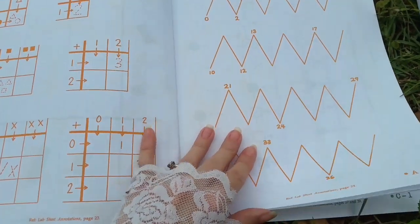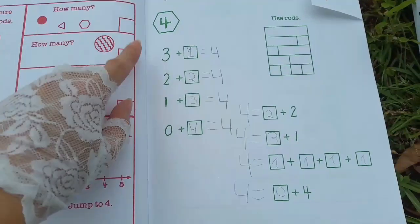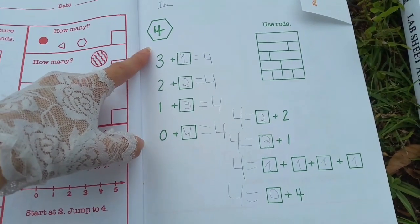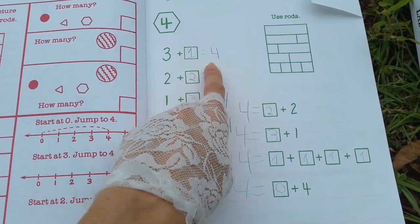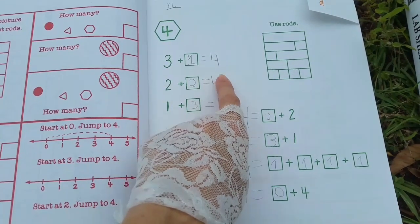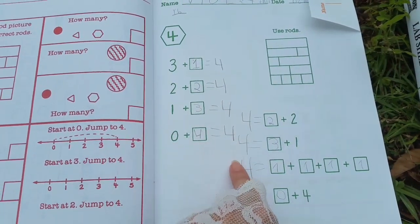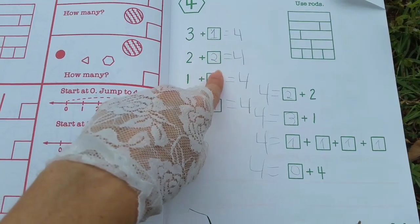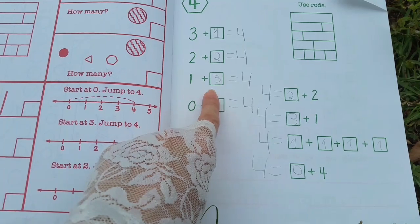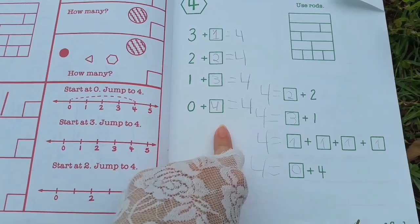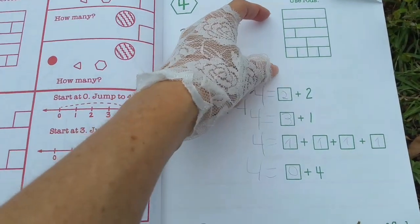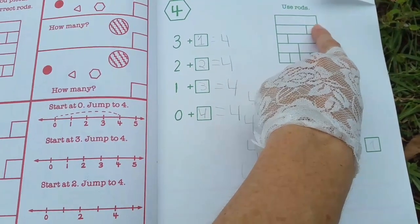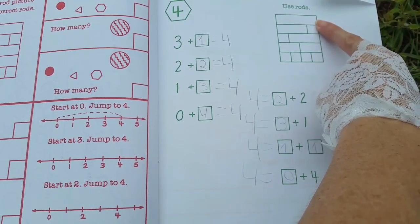And maybe I shouldn't have skipped that, I'd like to think that I'm going to go back. And then we came to pages like this. So all the answers on this page are going to be four and there's no equal sign on this page so that kind of threw my daughter off and she wanted to go ahead and draw in all the equals. So we are asked to find 3 + what = 4, 2 + what = 4, 1 + what = 4 and 0 + what = 4. And then we are encouraged to use our Cuisenaire rods here.